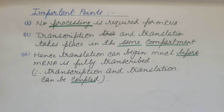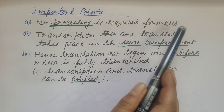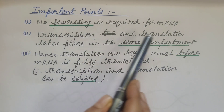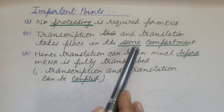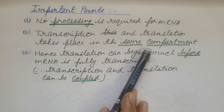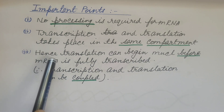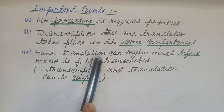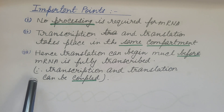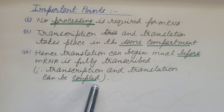Now let us discuss some important points of prokaryotic transcription. In prokaryotes, no processing is required for messenger RNA. In prokaryotes, transcription and translation take place in the same compartment — that is, the cytoplasm — because prokaryotes do not have a nucleus. Hence, in prokaryotes, translation can begin much before messenger RNA is fully transcribed. In other words, transcription and translation can be coupled in prokaryotes.